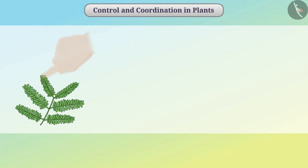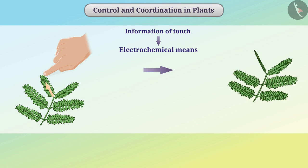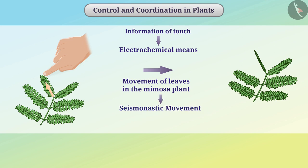Even if we touch the plant at any part, the response is given by other parts as well. For this, information of touch is transported to other parts of the plant by electrochemical means, and the leaves get closed. The movement of closing the leaves in the mimosa plant is termed as seismonastic movement, which is a growth-independent movement.